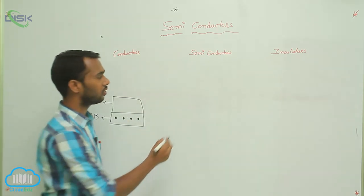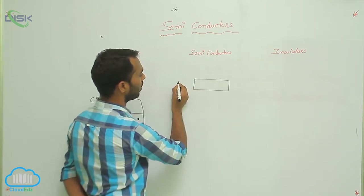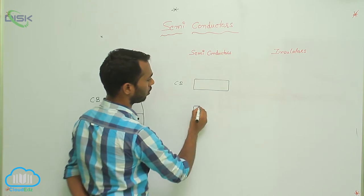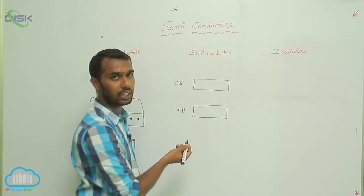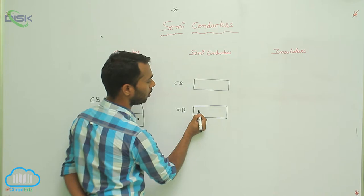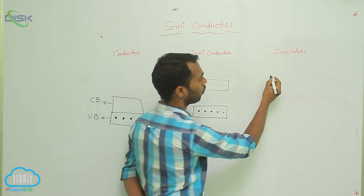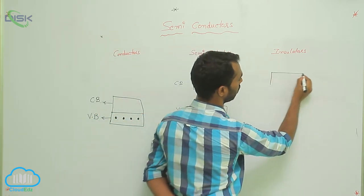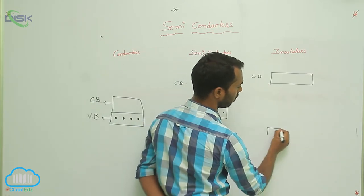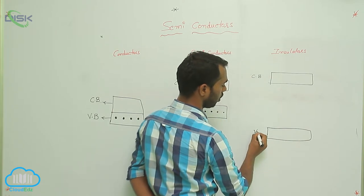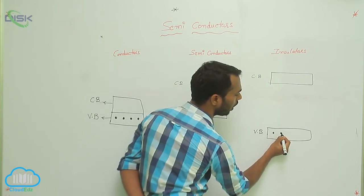I am drawing the diagram for semiconductors. Same — one is a conduction band, and the next one is a valency band. Electrons are always present in the valency band, so these are the electrons in the valency band. I am going to draw for insulators. It is a conduction band, and this is a valency band. Where are electrons present? In the valency band.